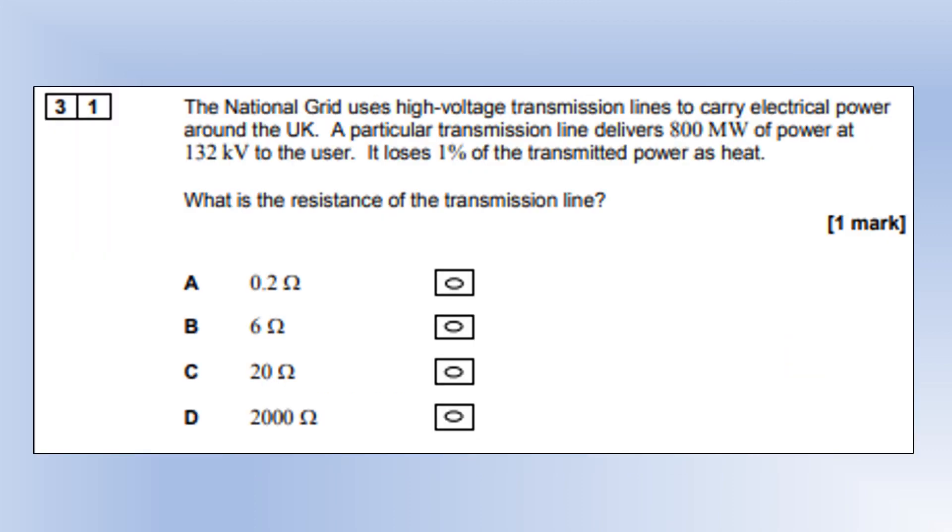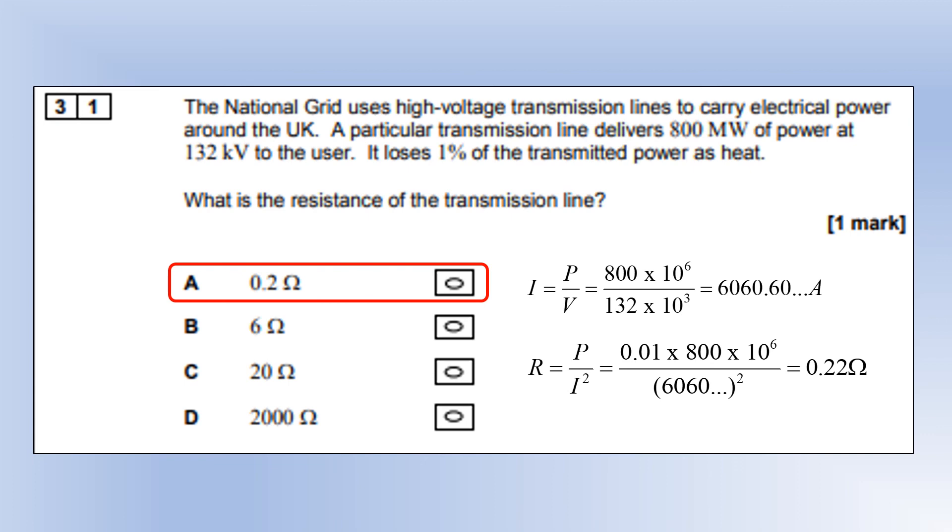The national grid uses high voltage transmission lines to carry electrical power. A particular transmission line delivers 800 megawatts of power at 132 kV. It loses 1% of the transmitted power as heat. What is the resistance of the transmission line? First, I worked out the current in the transmission line using the power and the voltage. Then once you've got the current, you can use P equals I squared R to figure out what the resistance is, which is option A. You need to avoid trying to use P equals V squared over R, because V stands for the potential difference across the component, which we don't know.